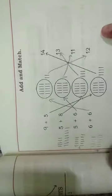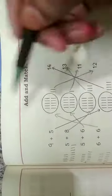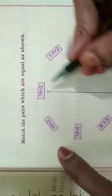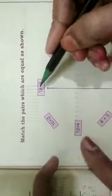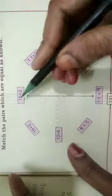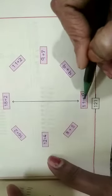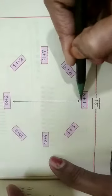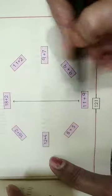Now we have to match the number of 10s. The first answer given is 18 plus 2 is equal to 20, and 11 plus 9 is equal to 20. These two sums have equal answers, so that's why they match these two sums.